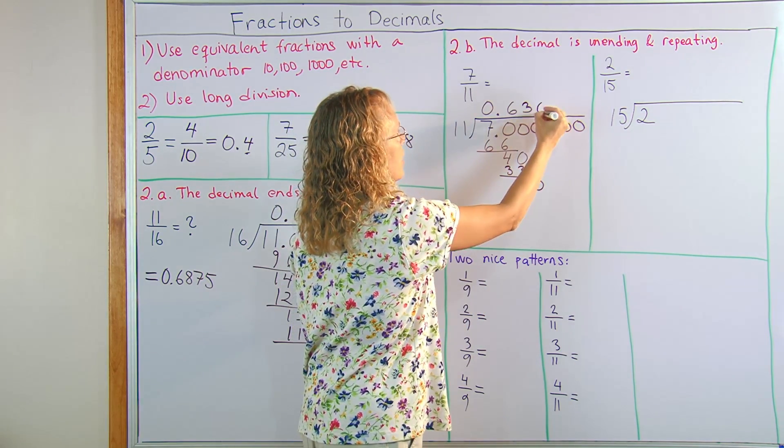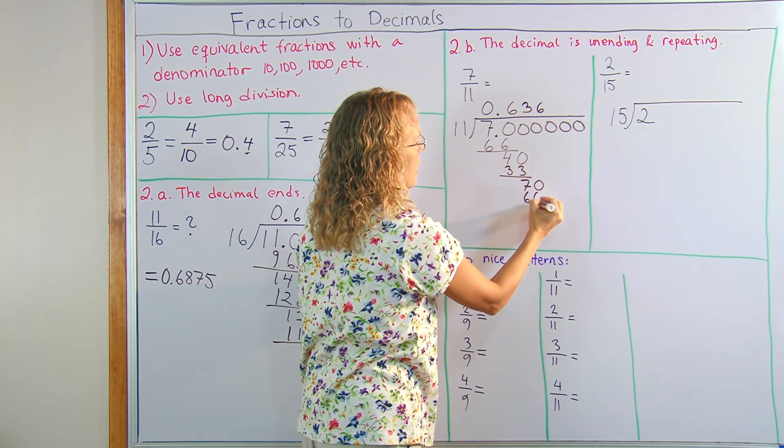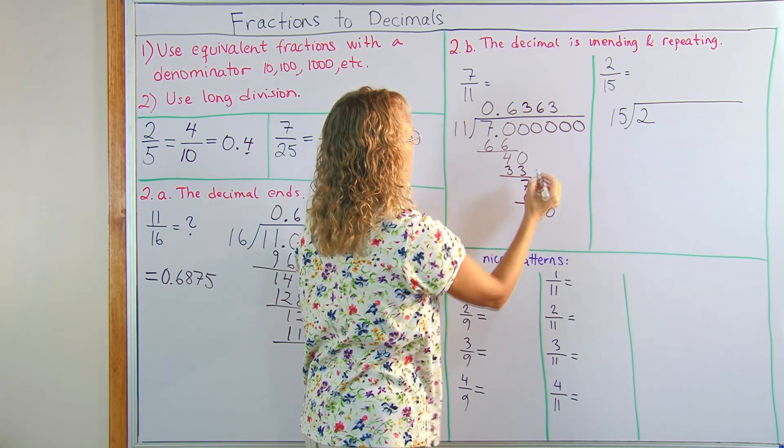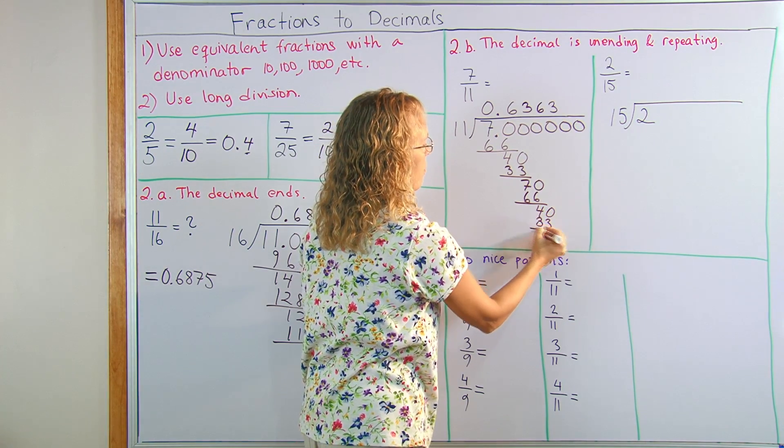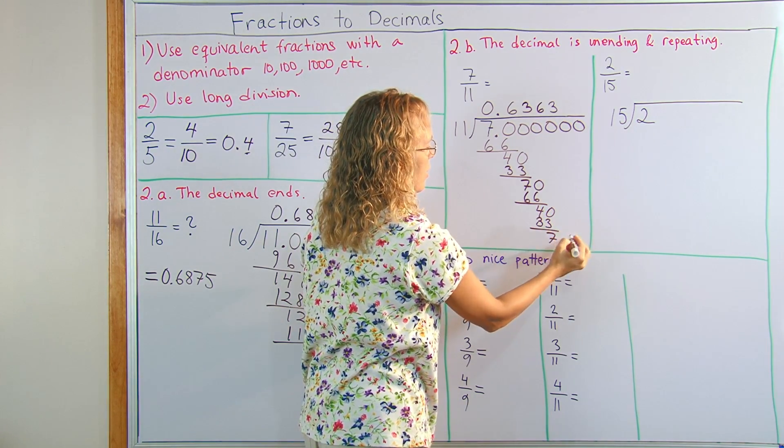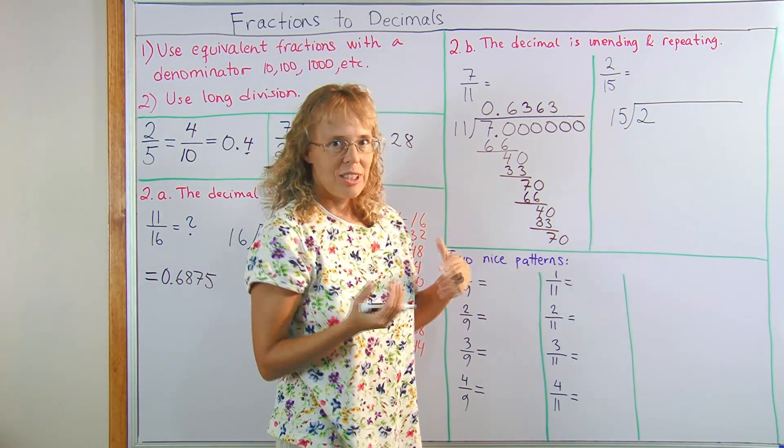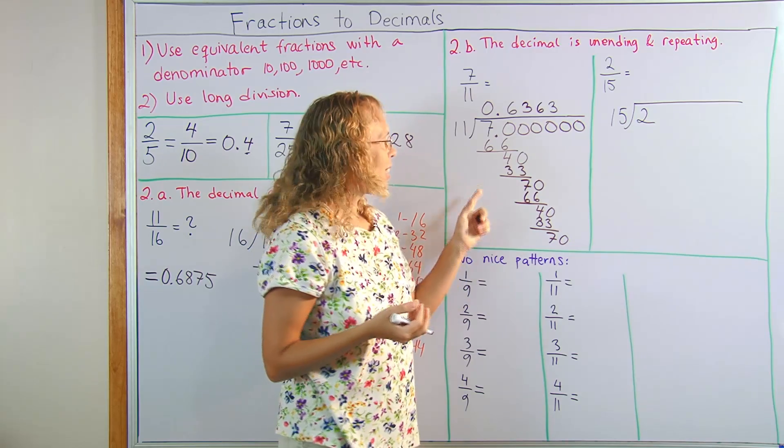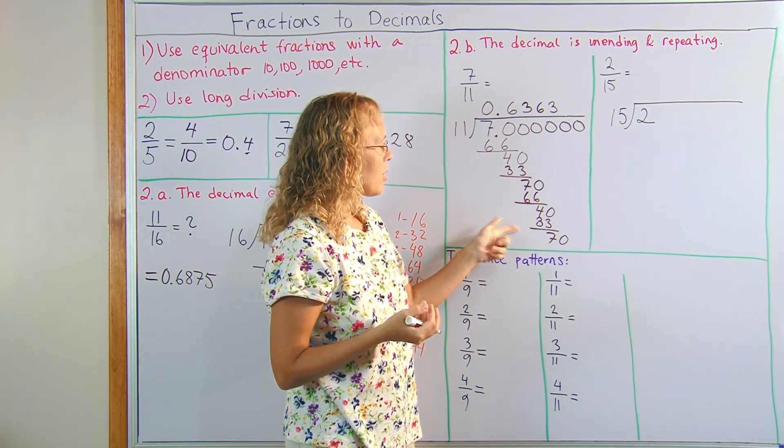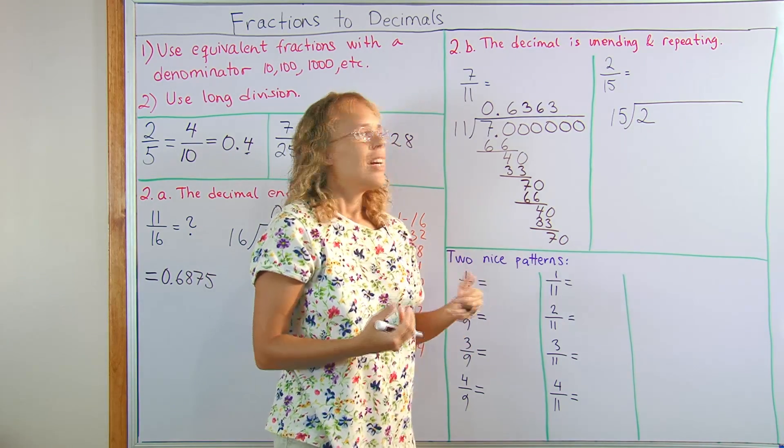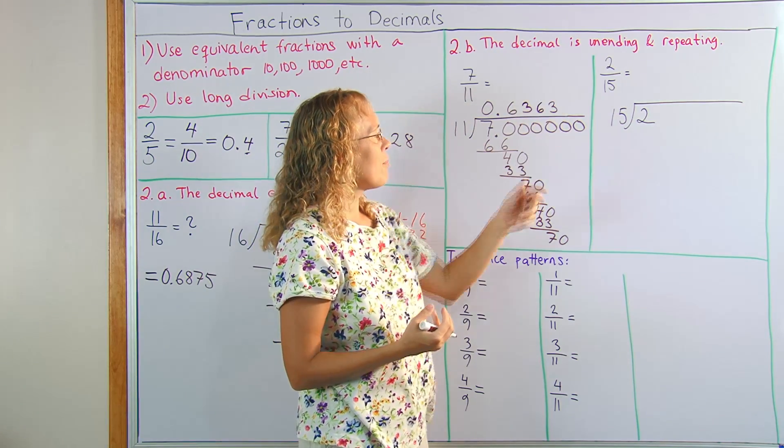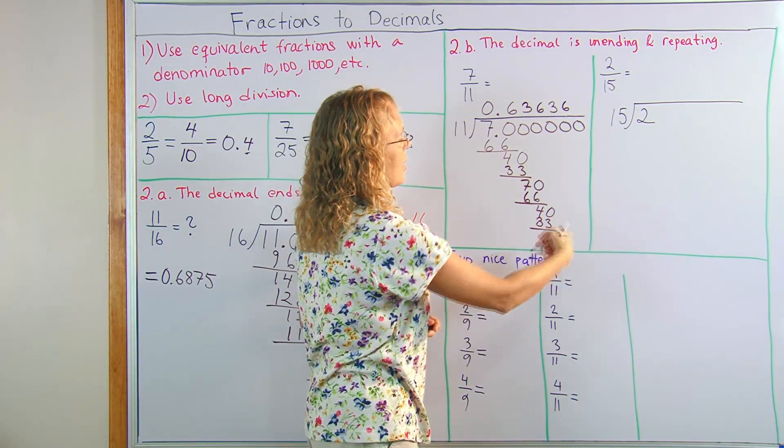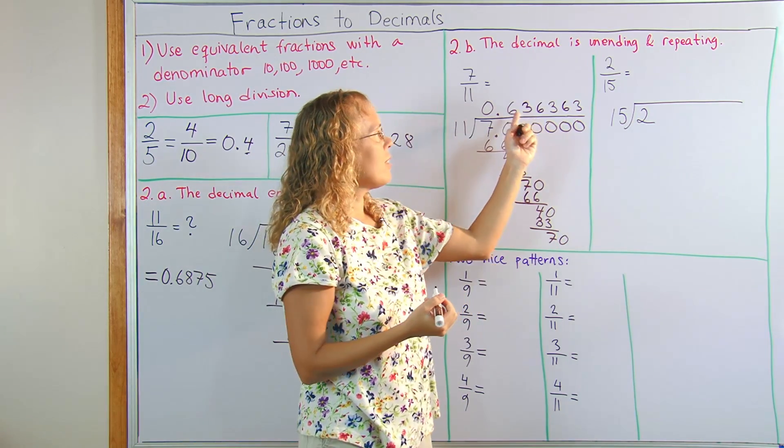Now it goes into 70 six times. 6 times 11, 66. Subtract 4. And then 40. Goes into 40 three times. 3 times 11, 33. Subtract and 7. And then another 0. Now I notice here pretty soon that my remainders here keep repeating. I keep getting the 7 and the 4, 7 and the 4. And so these numbers here keep being the same. Now it would be 6 again. 6 times 11, 66. Subtract.